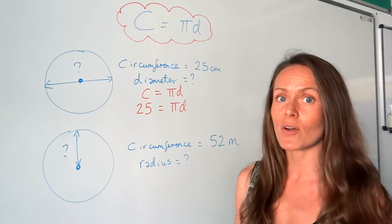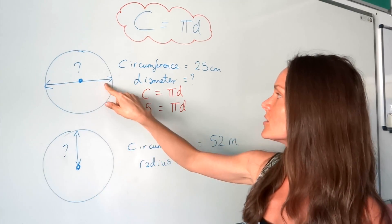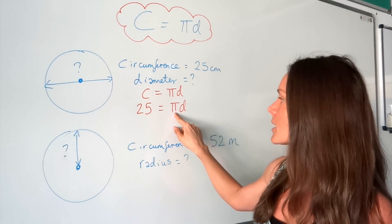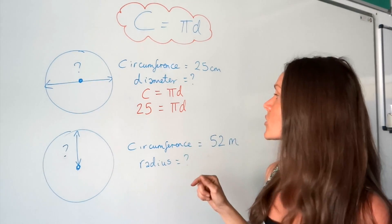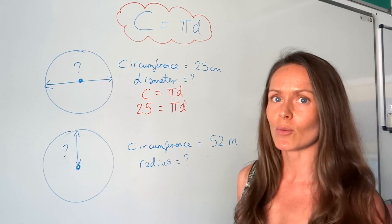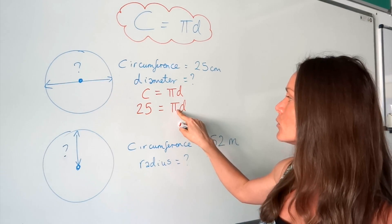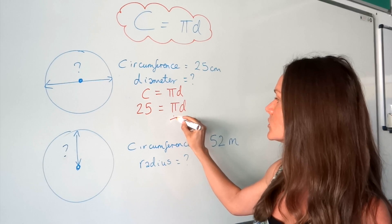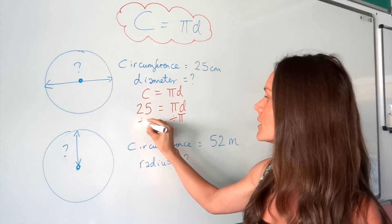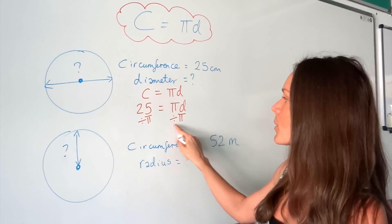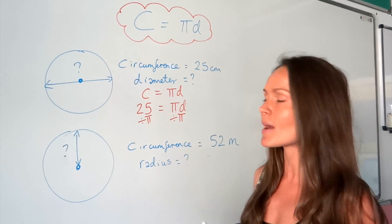We're trying to find the diameter, this distance here, which is d in the equation, but d is being multiplied by π. So to solve this equation to find d, I need to do the opposite. Instead of multiplying by π, I need to divide by π. When you're solving equations you have to do the same thing to both sides of the equation to keep it balanced.